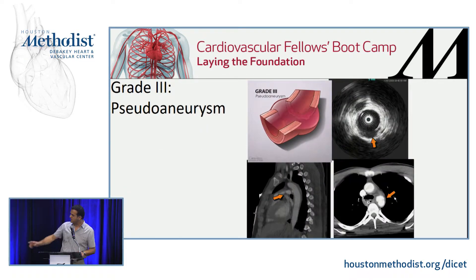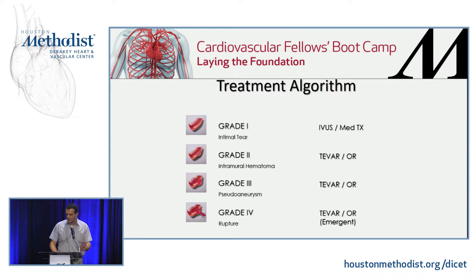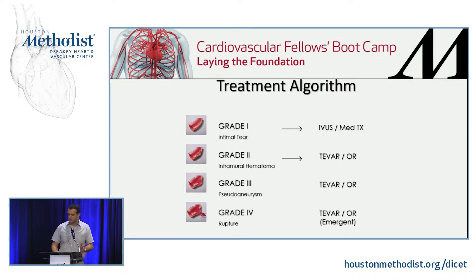Something to look for: on the CAT scan for grade three, you don't see any effusion — that's important. If you look at grade four, you already see some layering, some effusion on the left side of the chest. Grade one — a lot of us will just medically treat. Grade two — I usually individualize. But a lot of times we have to treat just because they want to raise blood pressure for intracranial injuries. And for grade four, there's no question you have to do open or endo.